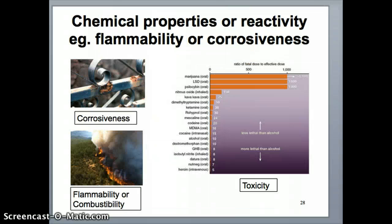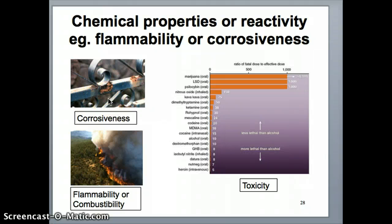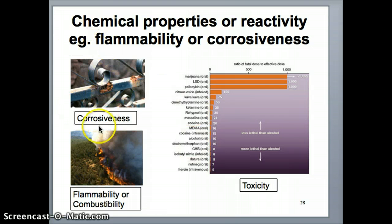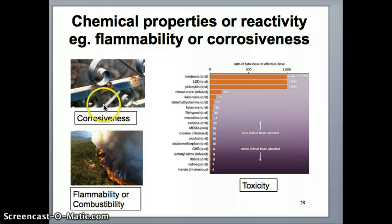Flammability is an example of a chemical property. Another example is corrosiveness — basically a measure of how well a substance would react with air and water, air containing oxygen usually. It's a measure of a substance's ability to undergo a redox reaction, an oxidation-reduction reaction, something we'll talk about later in the semester. All of these measure the ability of the substance to undergo a certain type of chemical reaction — in one case a combustion reaction, in another a redox reaction with specific substances.